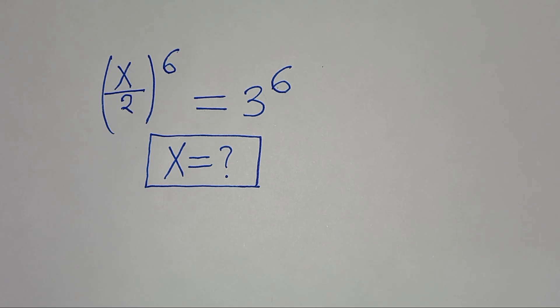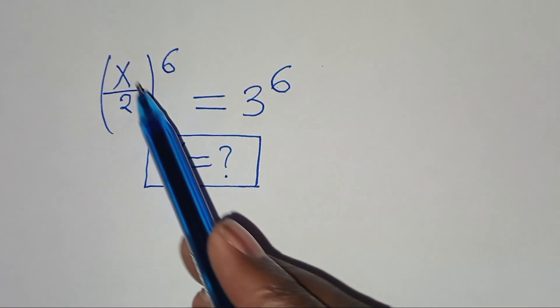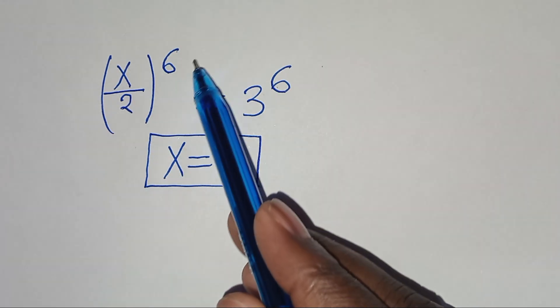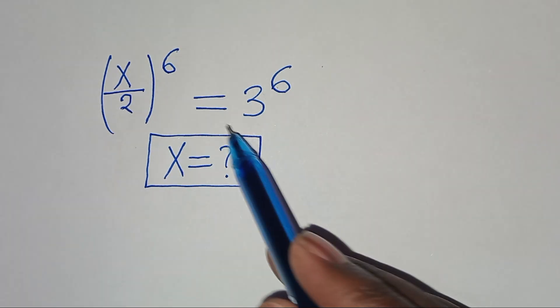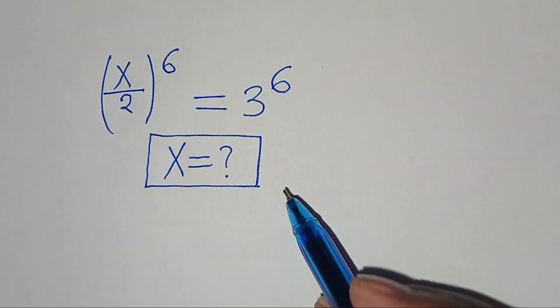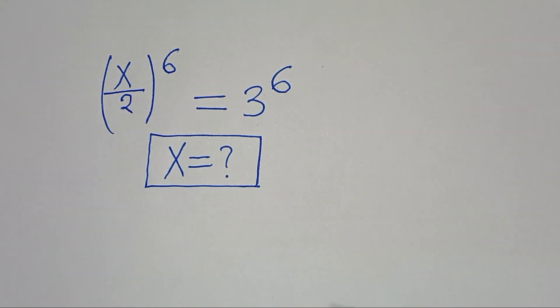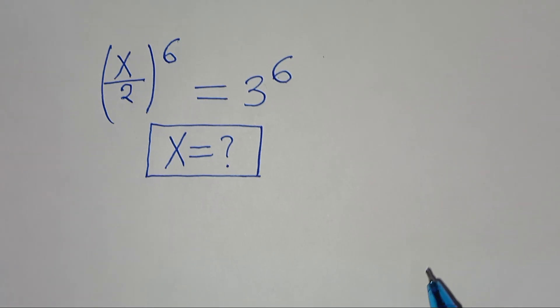Hello everyone, you are welcome to solve this nice algebra problem, which is (x/2) to the power of 6 equals 3 to the power of 6. What are the values of x?